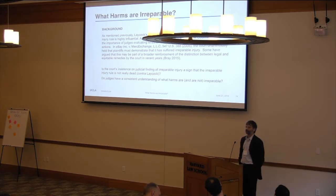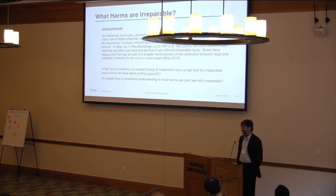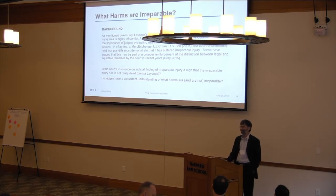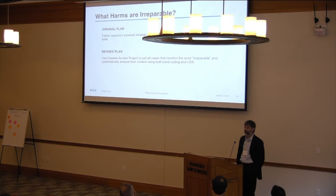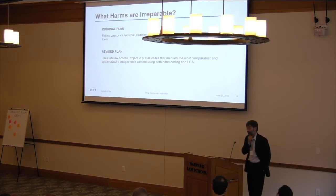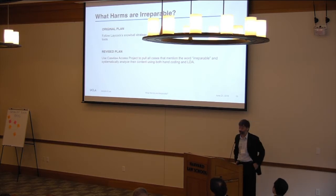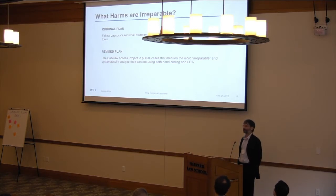I started thinking about this project a couple years ago, and last fall when I heard about the Case Law Access Project, I thought this would be a fun project to take this new data source for a spin. The original plan was to follow Laycock's snowball strategy of identifying cases using traditional legal research tools. The revised plan is to use the Case Law Access Project to pull all cases that mention the word 'irreparable,' all cases that mention the word 'injunction,' and systematically analyze their content using both hand coding — in order to match and replicate what Laycock did — as well as LDA or other natural language processing tools.